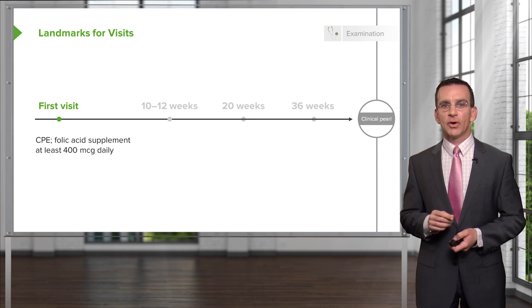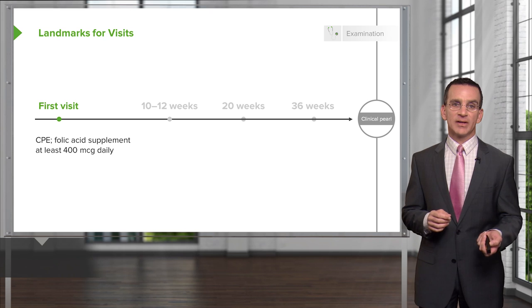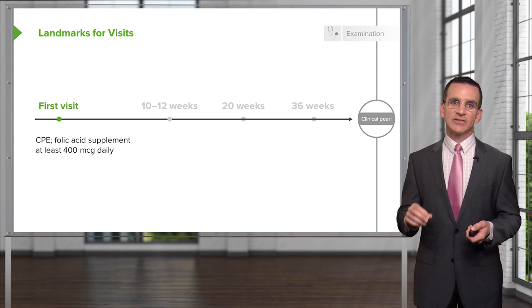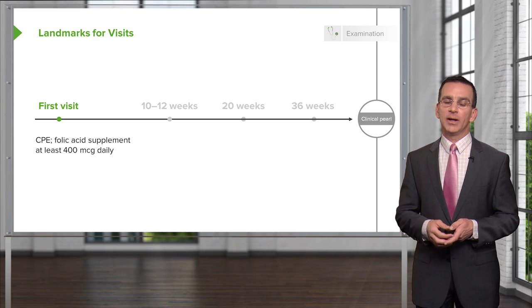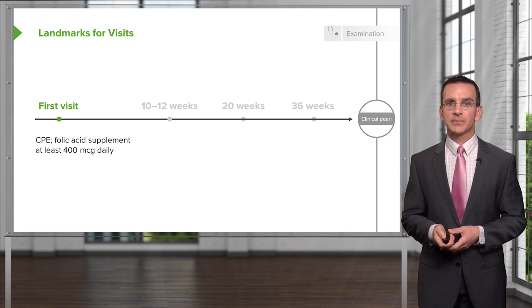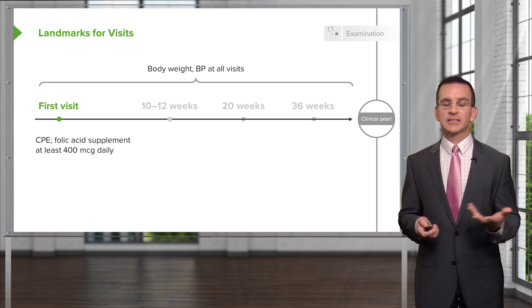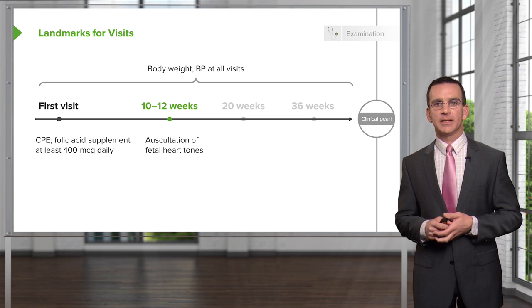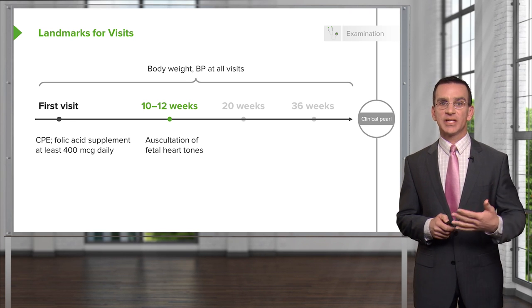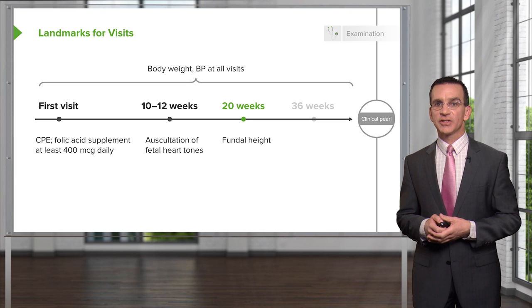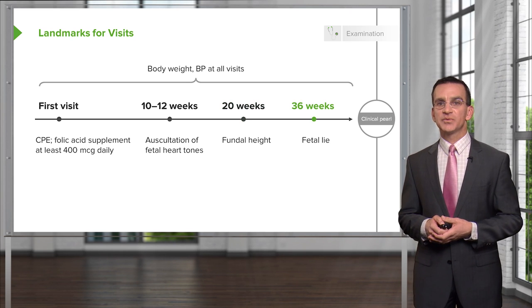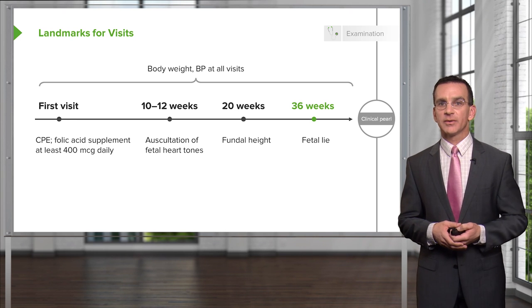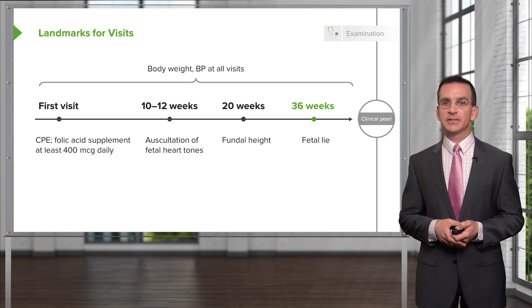To provide some landmarks: the first visit includes a complete pelvic examination. You're also going to initiate folic acid supplementation — the recommendation is at least 400 micrograms daily, usually one milligram (1000 micrograms) daily. Body weight and blood pressure checks are done at all visits. You should be able to auscultate fetal heart tones with Doppler ultrasonography at gestational age 10 to 12 weeks. At 20 weeks you start checking fundal height, and at 36 weeks you check the fetal lie.